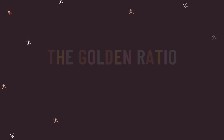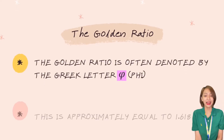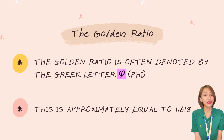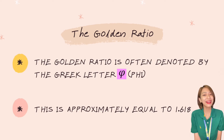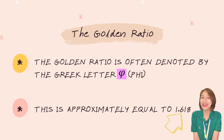Next up is the golden ratio. The golden ratio is often denoted by the Greek letter phi, and is approximately equal to 1.618.